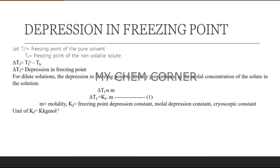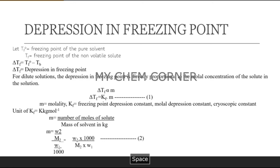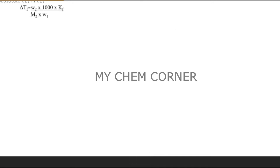We expand the same way as we learned in elevation of boiling point: molality is number of moles of solute divided by mass of solvent in kilograms. W2 refers to solute and W1 refers to solvent. Substituting equation 2 into equation 1 gives the same type of equation - except where you had delta Tb you now have delta Tf, and where you had Kb you now have Kf. Rearranging to find M2, the molar mass, gives the same formula structure as for boiling point, just using delta Tf instead of delta Tb.